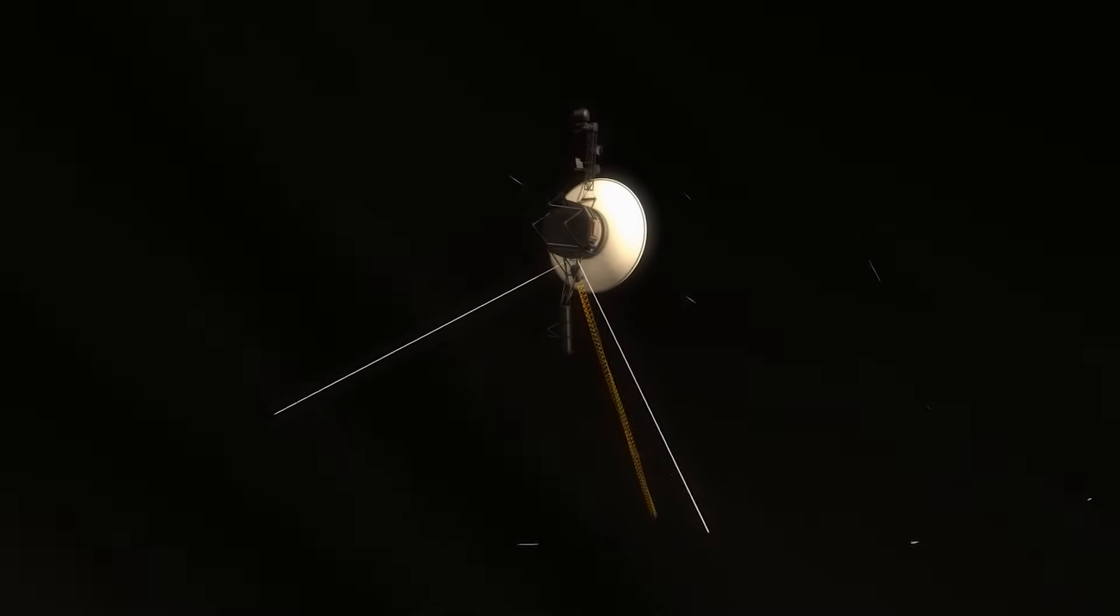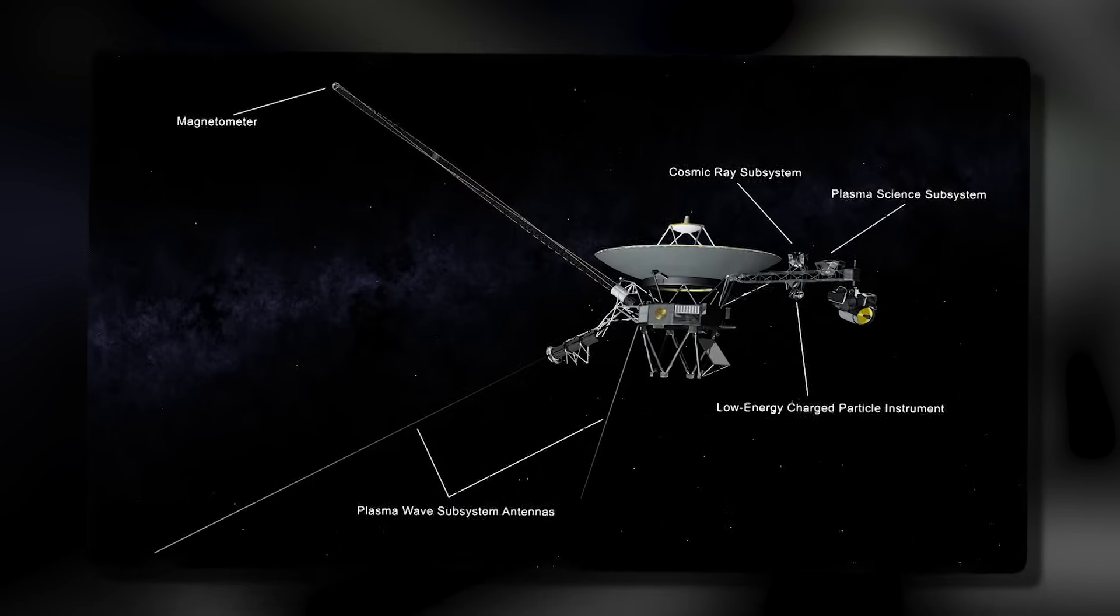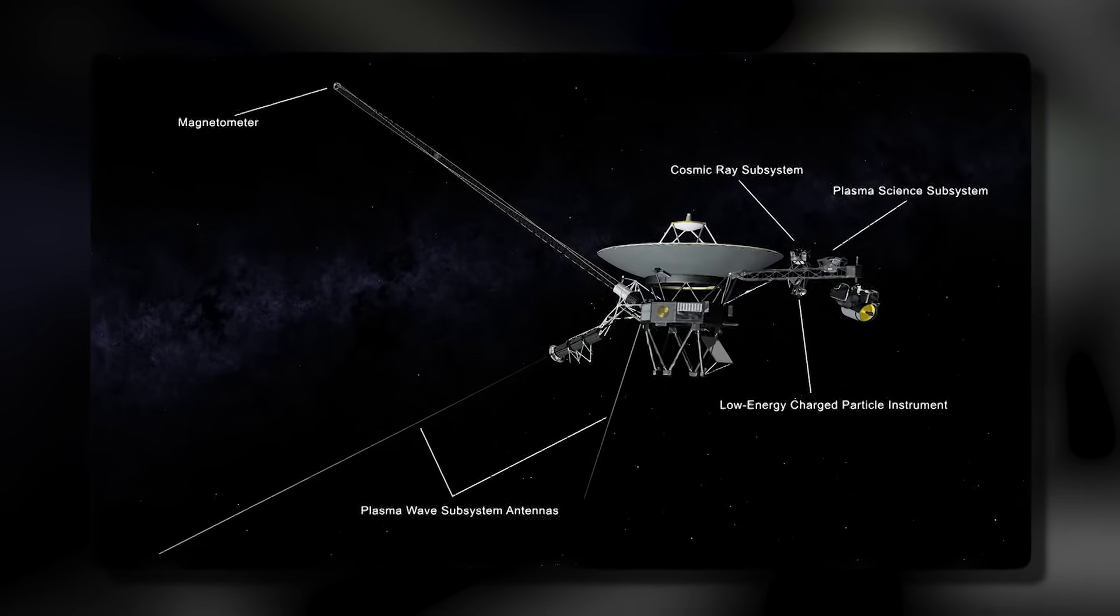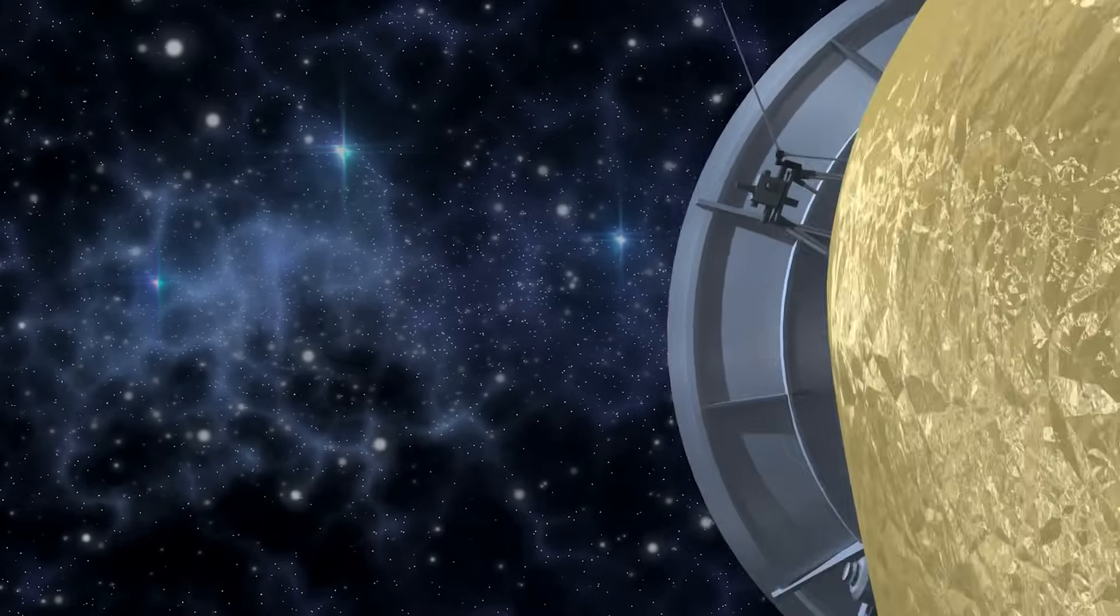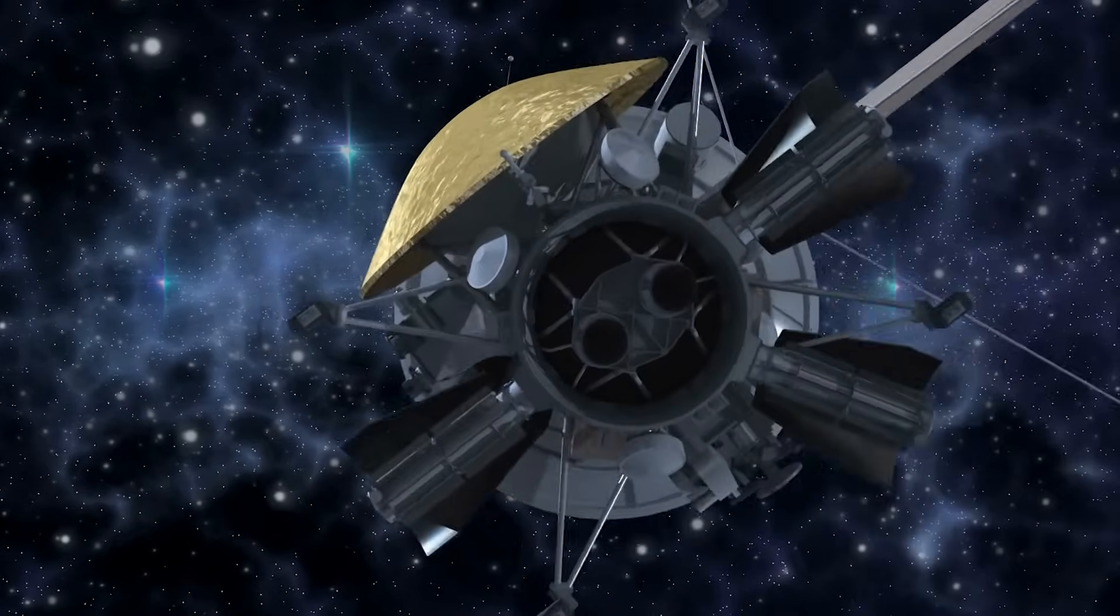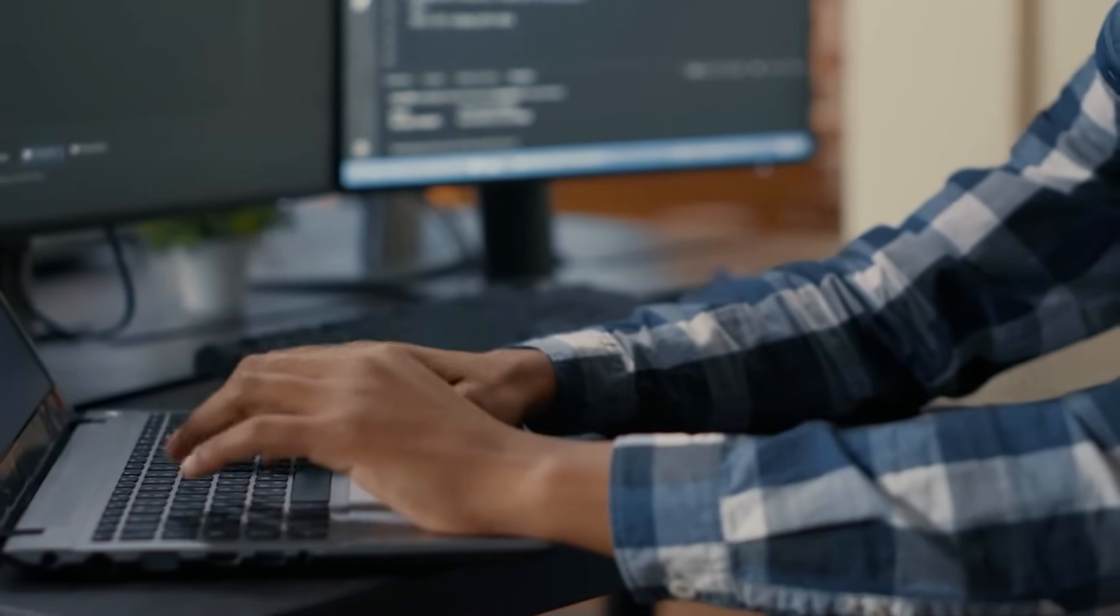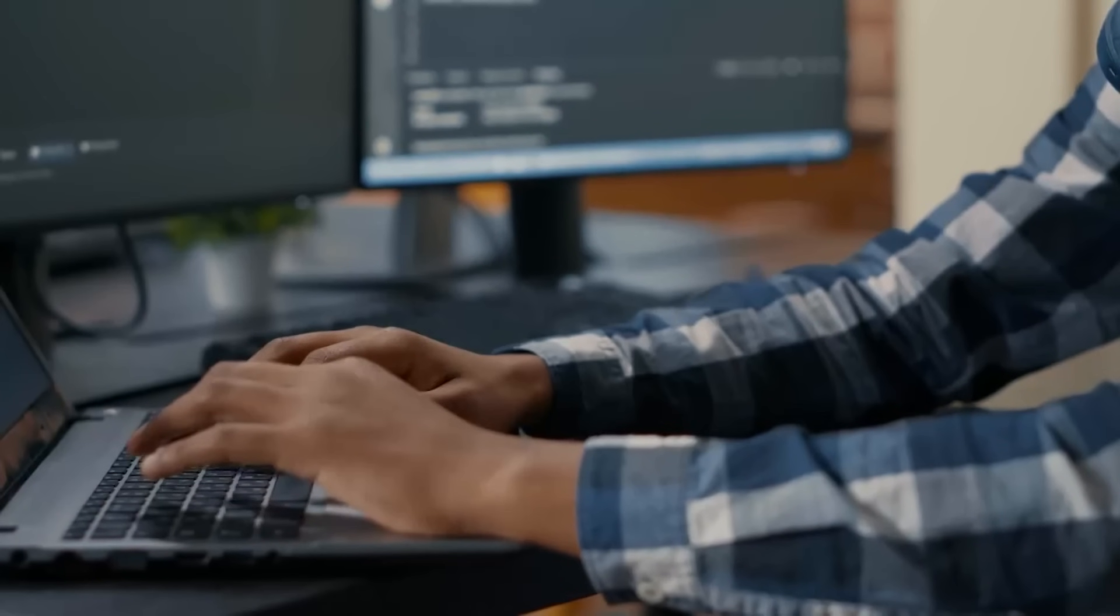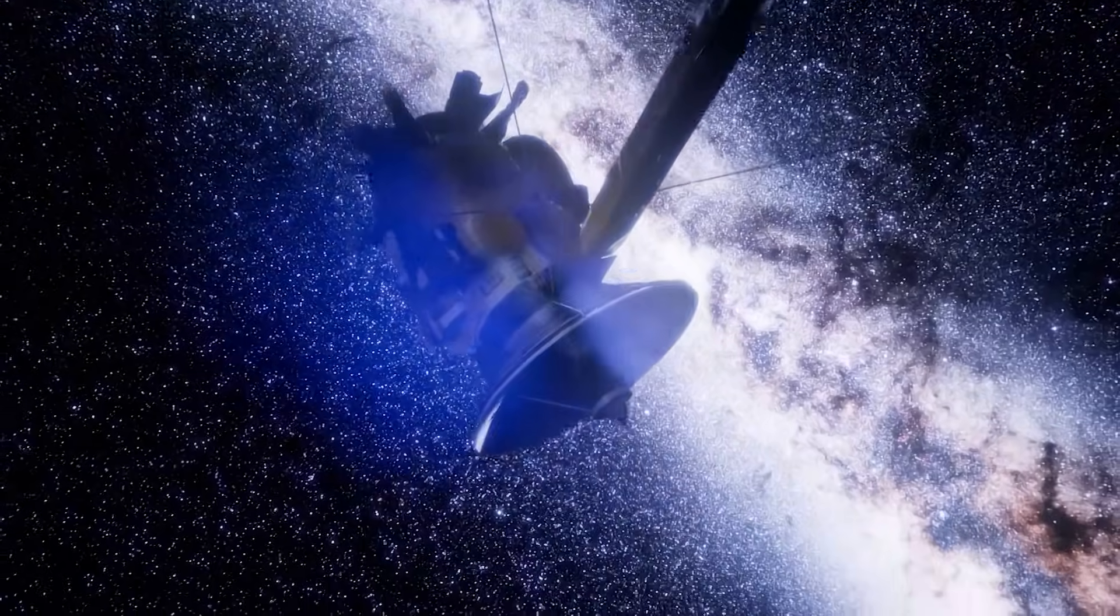Whatever Voyager 1 encountered, it was fleeting, lasting only 43 minutes and 29 seconds. During that time, the spacecraft's instruments not only recorded energy and gravitational wave anomalies, but also experienced subtle disruptions to its internal electronics. Nothing was permanently damaged, but the onboard computer reported momentary checksum mismatches, as if some outside influence had attempted to interact with or probe the system.